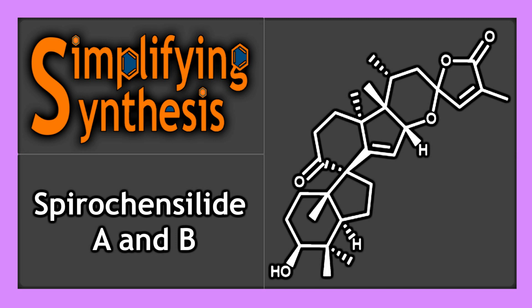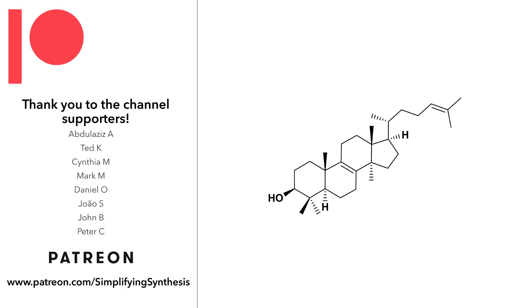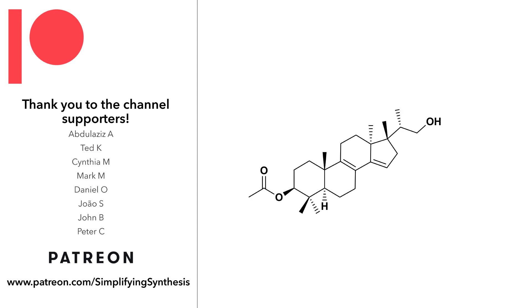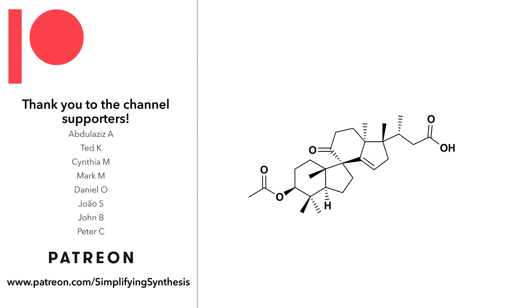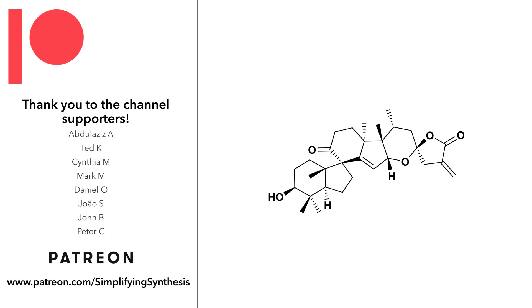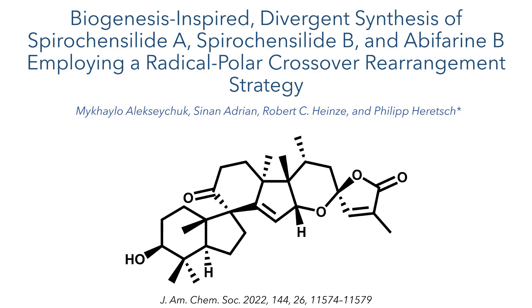Welcome back to Simplifying Synthesis. In this video, we are going to look at the synthesis of spirochinenside A and B. This work is taken from the paper 'Biogenesis Inspired Divergence Synthesis of Spirochinenside A, Spirochinenside B, and Abifarine B', employing a Radical Polar Crossover Rearrangement Strategy, published in JACS by the Herich Group.